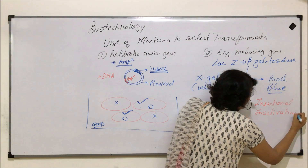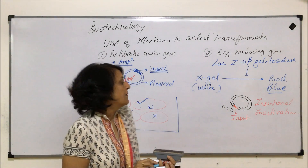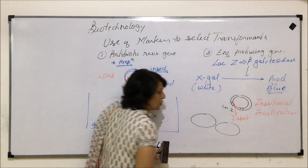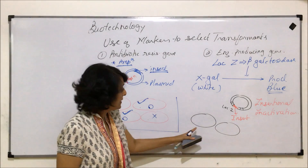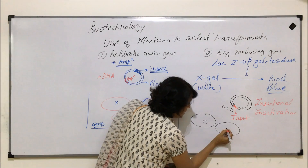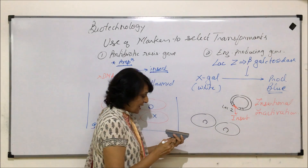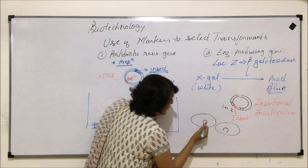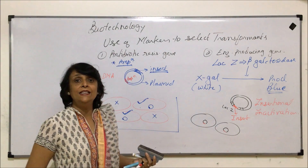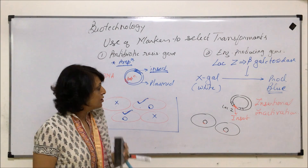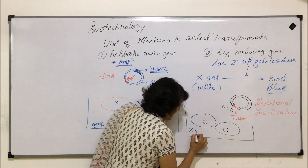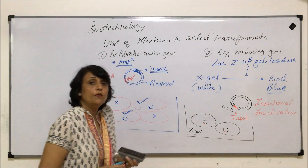Insertional inactivation. Now, how are we going to use this? This is the E. coli which we are trying to test — whether it is a transformant or not. What we have introduced into it is our R-DNA, and this R-DNA has our insert. The insert has gone into the LAGZ gene. If we keep these E. coli in X-gal, what will be the color?